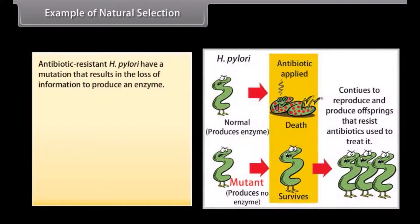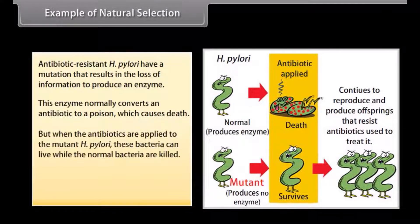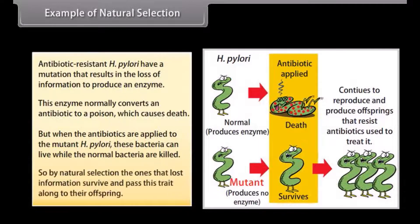An example of natural selection is antibiotic-resistant H. Pylori, which have a mutation resulting in the loss of the ability to produce an enzyme. This enzyme normally converts an antibiotic to a poison that causes death. When antibiotics are applied to the mutant H. Pylori, these bacteria can live while normal bacteria are killed. By natural selection, the one that lost information survives and passes this trait along to their offspring.